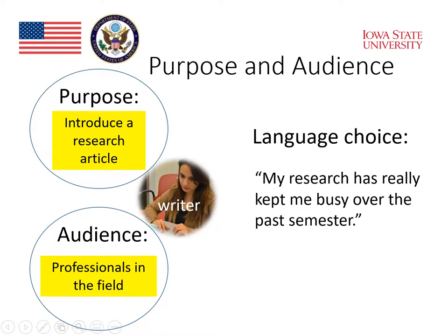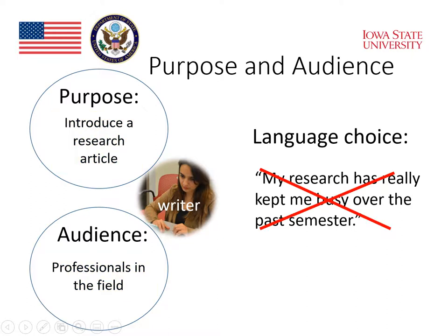Let's change the audience and purpose to one that is very important also for graduate students. What if the audience is professionals in the field and the purpose is introducing research articles? Our graduate students, after they do their research, want to be able to write an article and submit it to a journal so it will get published. So the writer is the same — she's talking about her research, but the purpose and the audience are different. What if she chooses to introduce her research by saying, 'My research has really kept me busy over the past semester.' Will that work? Is that a good way to start a research article?